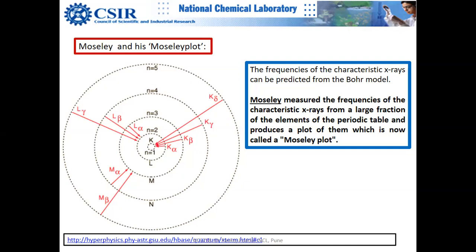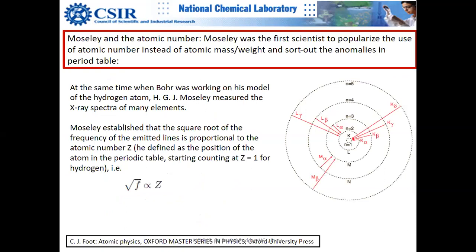Chemists somehow don't acknowledge Moseley's contribution to the periodic table enough — they attribute it more to Mendeleev. I would equally honor both of them. This is Moseley's original plot, from a physics book — C.F. Foot's Atomic Physics. He was a student of Rutherford, who described him as one of the most talented students.